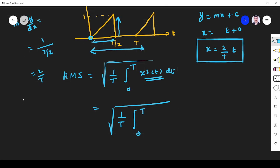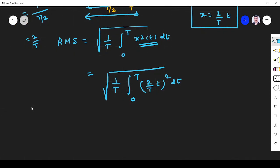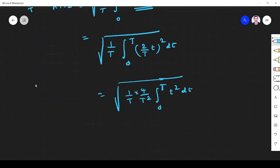So substitute that x value here. So 2 by t into t, square dt. So this will be equal to 1 by t. So it is 2 by t whole square. So it is 4 by t square. So 4 by t square, t square dt. So if you simplify,